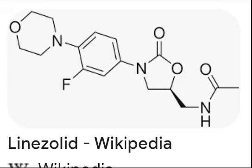Metabolism: Linezolid undergoes oxidation of the morpholine ring, resulting in two inactive carboxylic acid metabolites A and B. Metabolite A is formed enzymatically while metabolite B is produced via non-enzymatic chemical oxidation. Excretion: Renal clearance is about 40 mL/min, indicating tubular reabsorption. Under steady-state conditions, approximately 30% of the administered dose is eliminated in the urine as linezolid, while 40% and 10% are excreted as metabolite B and metabolite A, respectively. Metabolites of linezolid can accumulate in patients with renal impairment.